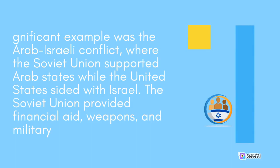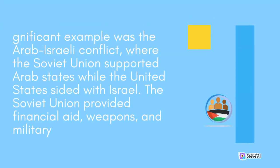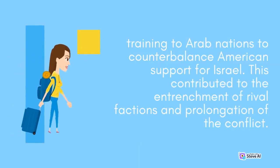The Soviet Union supported Arab states while the United States sided with Israel. The Soviet Union provided financial aid, weapons, and military training to Arab nations to counterbalance American support for Israel. This contributed to the entrenchment of rival factions and prolongation of the conflict.